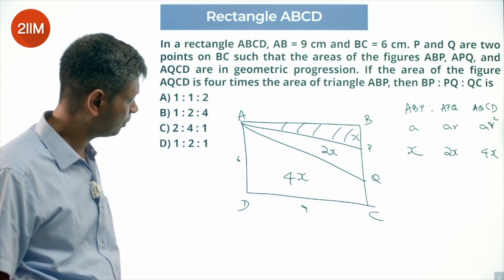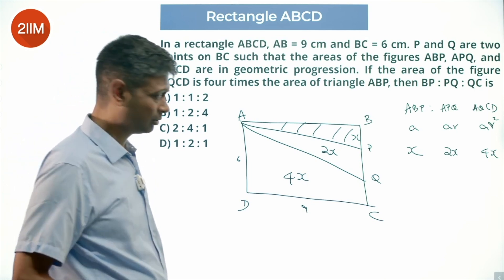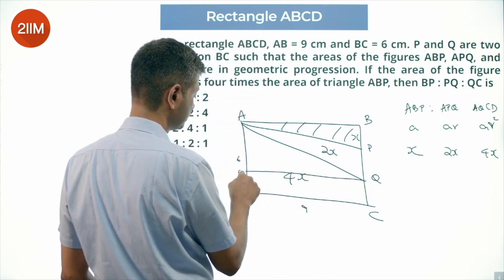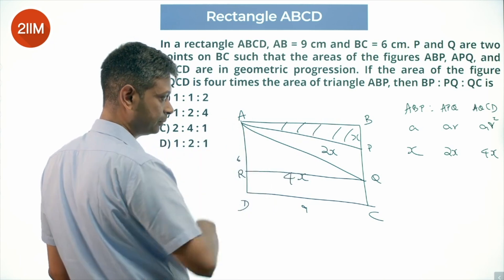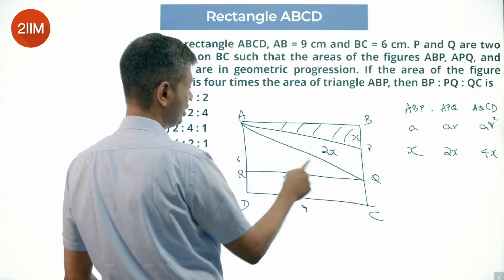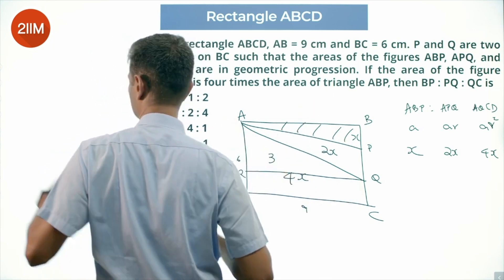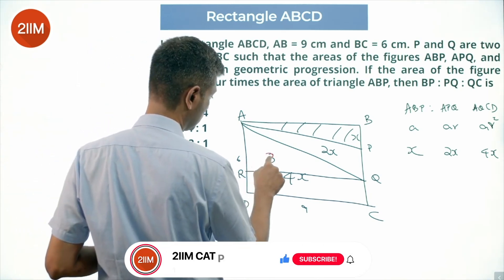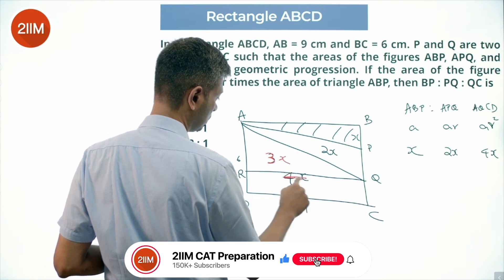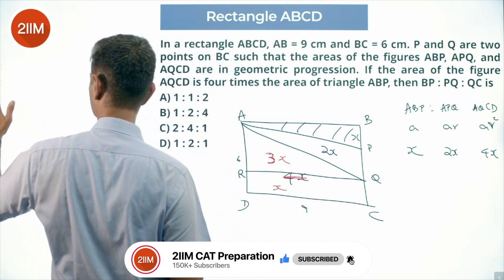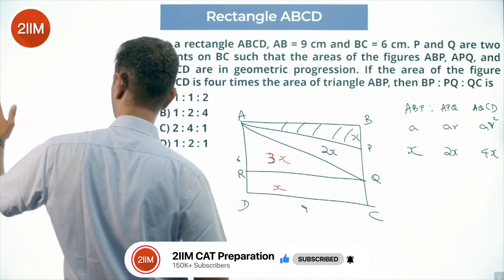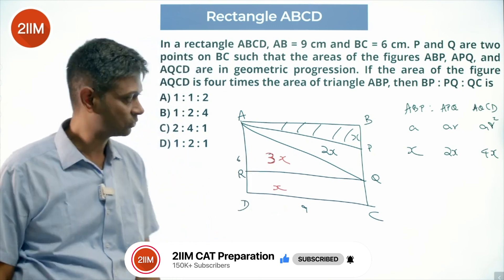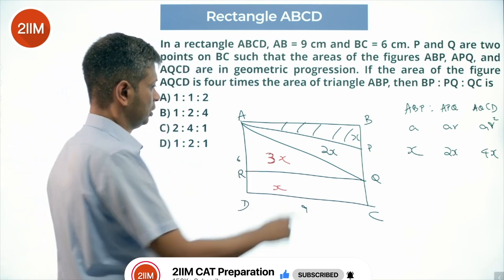I'm going to draw a line QR parallel to AB. With this construction, the area of ABP is X, and the remaining region can be broken into parts: one region of area X and another of 2X, giving 3X total in a combined sub-region.